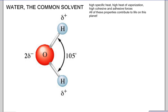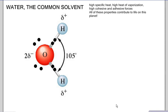This high heat of vaporization and high specific heat deal with the type of bond between oxygen and hydrogen. It is a polar covalent bond where oxygen has six valence electrons and each hydrogen has one valence electron. They share their valence electrons in a covalent bond. Oxygen has a very high electronegativity, meaning it does not share electrons well — in fact, it's going to pull these electrons towards itself.